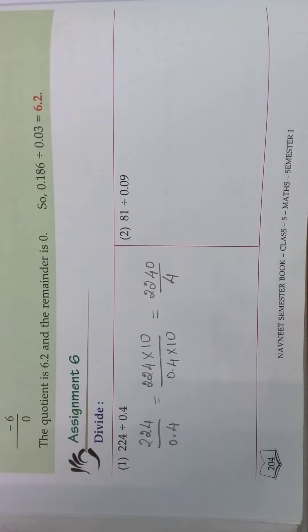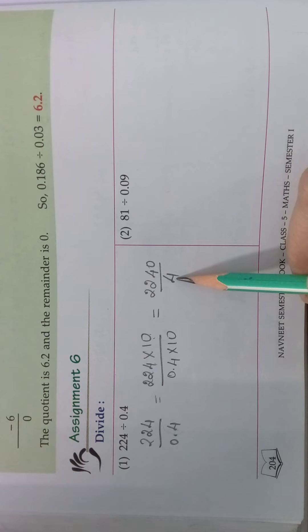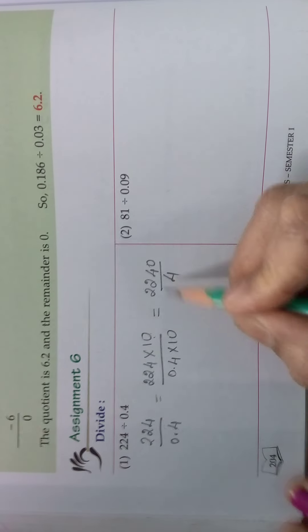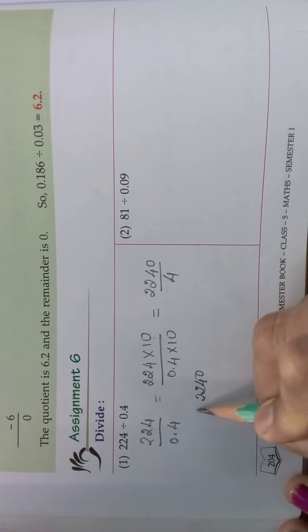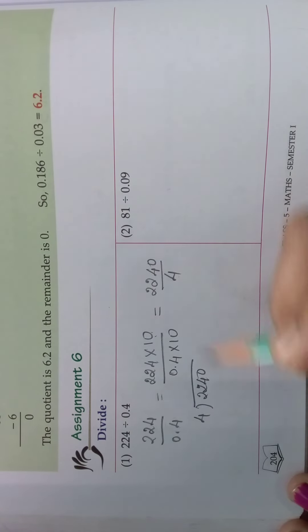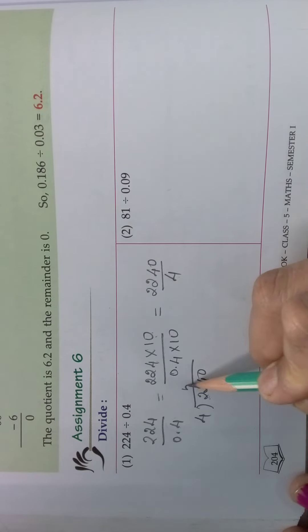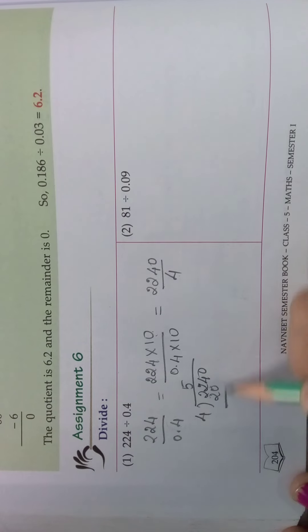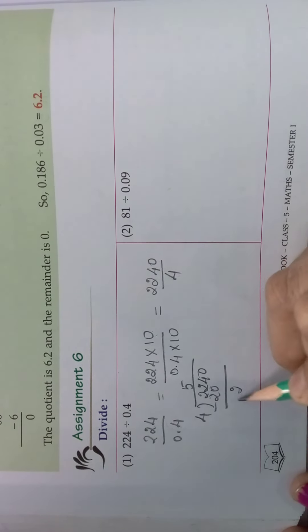2240 divided by 4. It will become how much? See 2240. Since we are multiplying by 10, it will become 4. Now divide this number 2240 divided by 4. Now take 2 is small number, say to take 2 digits. 5 fours are 20. Now subtract 2 minus 0 to 2 minus 2 is 0.